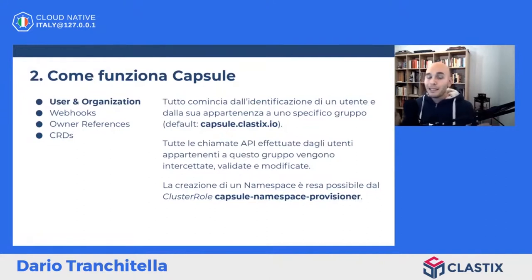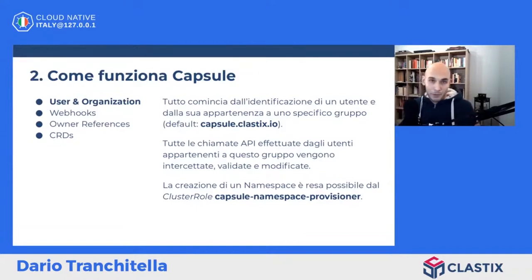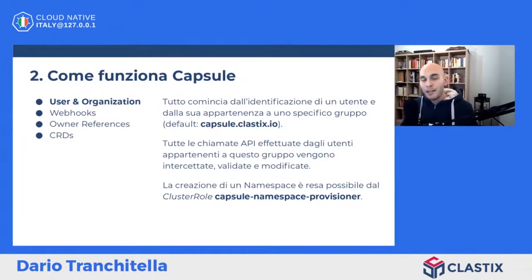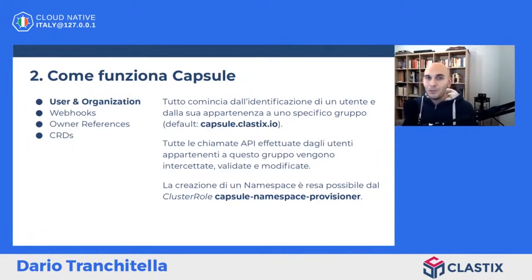Tutto comincia da un utente che appartiene a uno specifico gruppo. Il valore di default è capsule.clastix.io ma può essere personalizzato. Tutte le chiamate API effettuate da questi utenti vengono intercettate, validate e modificate. In Kubernetes non esiste il concetto di utente; quello che facciamo con Capsule è agganciarci all'OpenID Connect Provider, all'Identity Provider, per avere una sorta di astrazione di utente. Si possono usare anche i certificati, è solo un pochino più macchinoso.